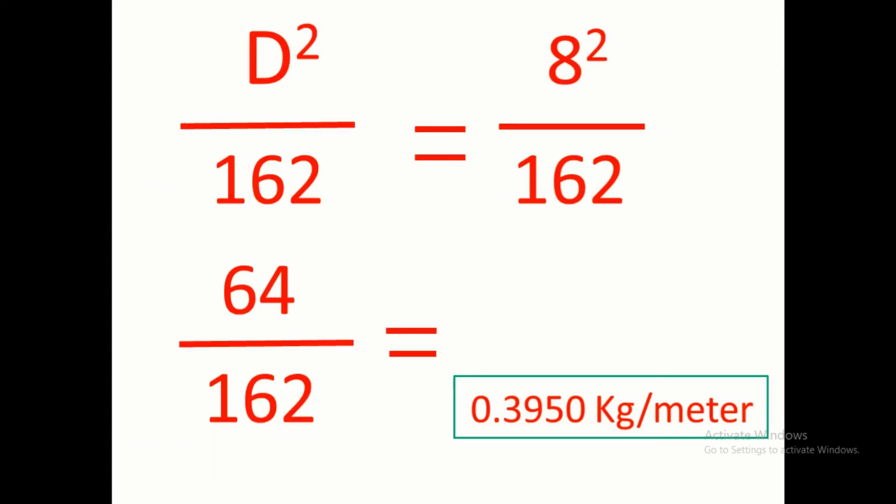This formula remains the same for all other bars also: D² by 162. Suppose the diameter of the bar is 8 mm, therefore 8² by 162, 64 by 162 is equal to 0.3950 kg per meter. This is once again, I will like to repeat, the weight of the 8 mm bar per meter length of the bar.